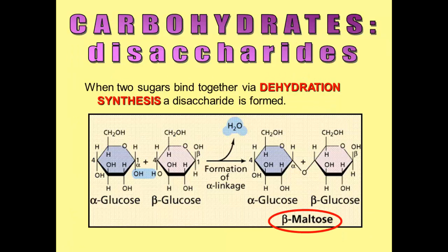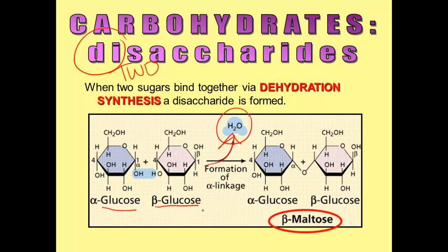The second type of carbohydrate we're going to talk about is a disaccharide. 'Di' means two, so two sugars. And when you bind two sugars together, you do that with dehydration synthesis, as discussed in the last screencast. You take away a water and you stick two glucose molecules together. Two monomers stuck together make a disaccharide. When you put glucose with glucose together, you end up with one of the most important disaccharides you'll learn about this year, and that is maltose.